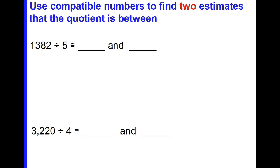This time our directions have changed — we're going to use compatible numbers to find two estimates that the quotient is between. We're essentially going to do the same thing we did before, but we have to do it twice. So: 1382 divided by 5 is approximately equal to blank and blank.